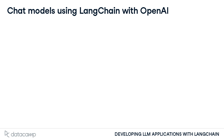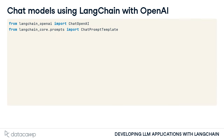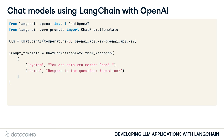LangChain also provides classes specifically designed to work with chat models, like ChatPromptTemplate and ChatOpenAI. The ChatOpenAI class provides more chat-specific functionality than the standard OpenAI class. We can instantiate the model as normal, making sure to provide our OpenAI API key. To generate a ChatPromptTemplate for the model, we can then call the FromMessages method on ChatPromptTemplate.